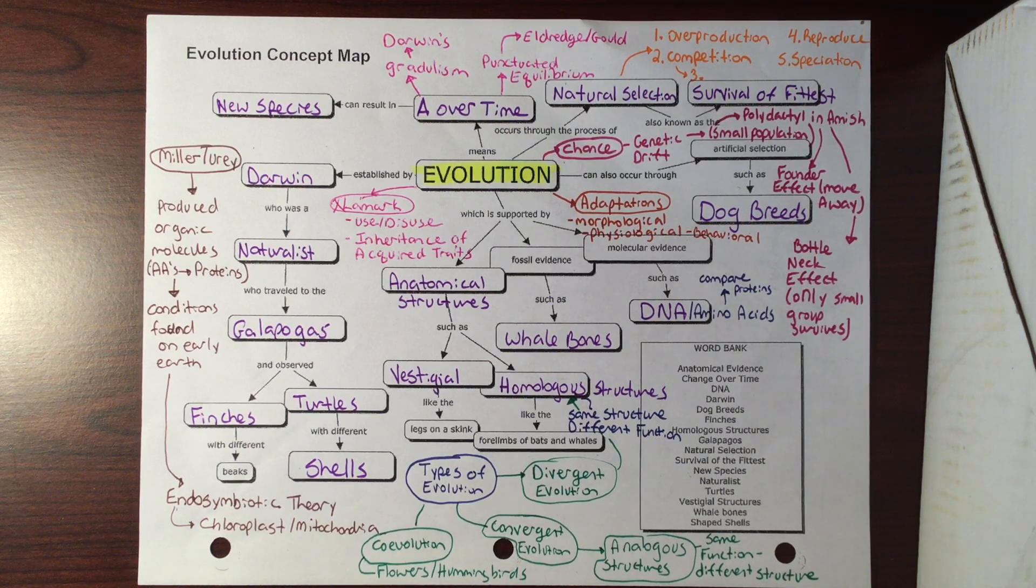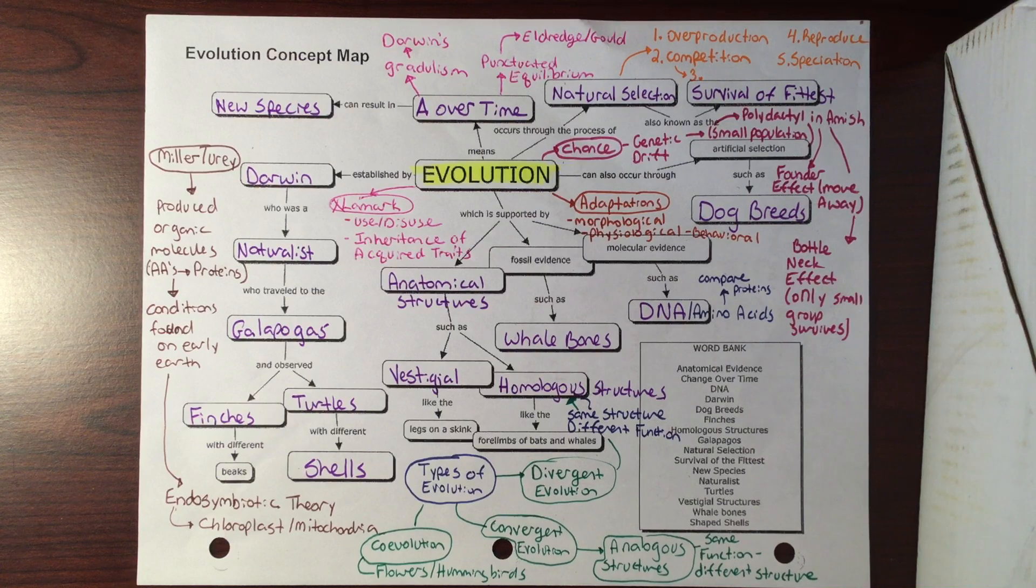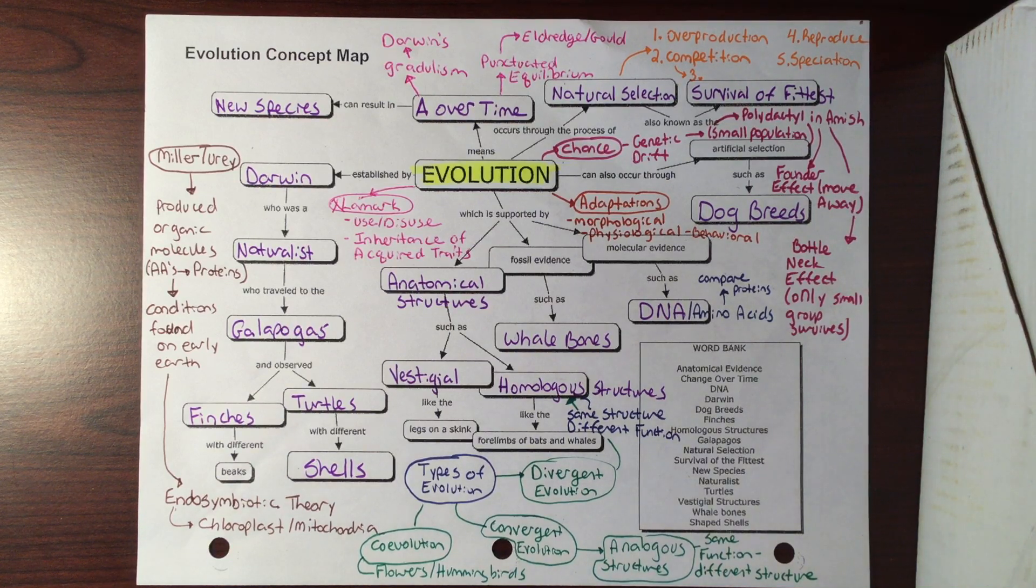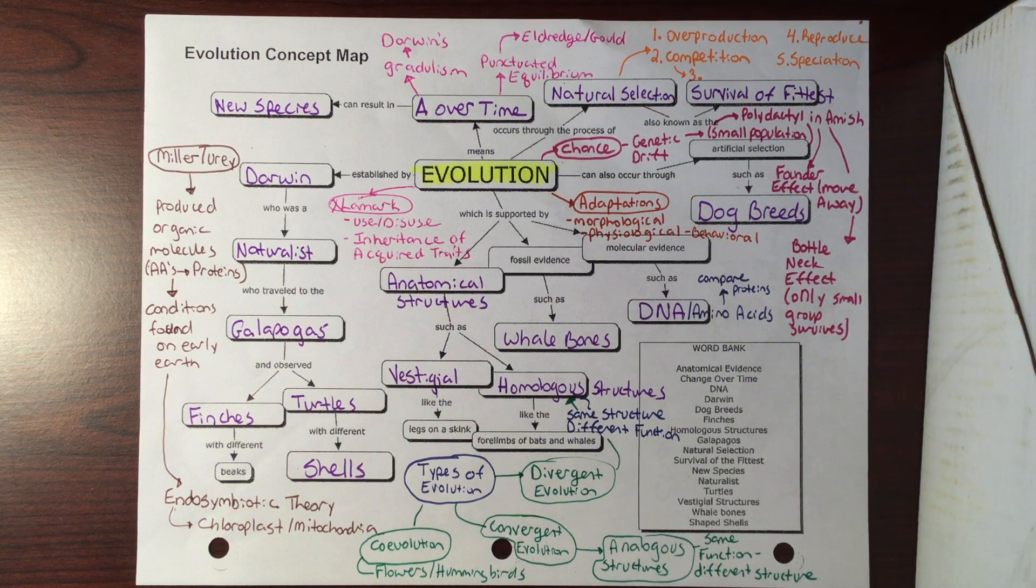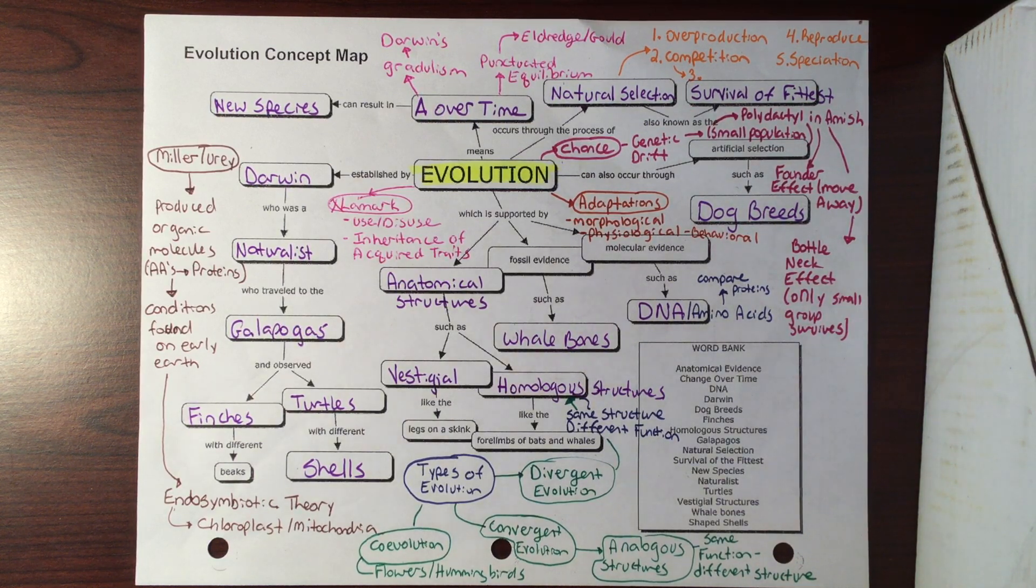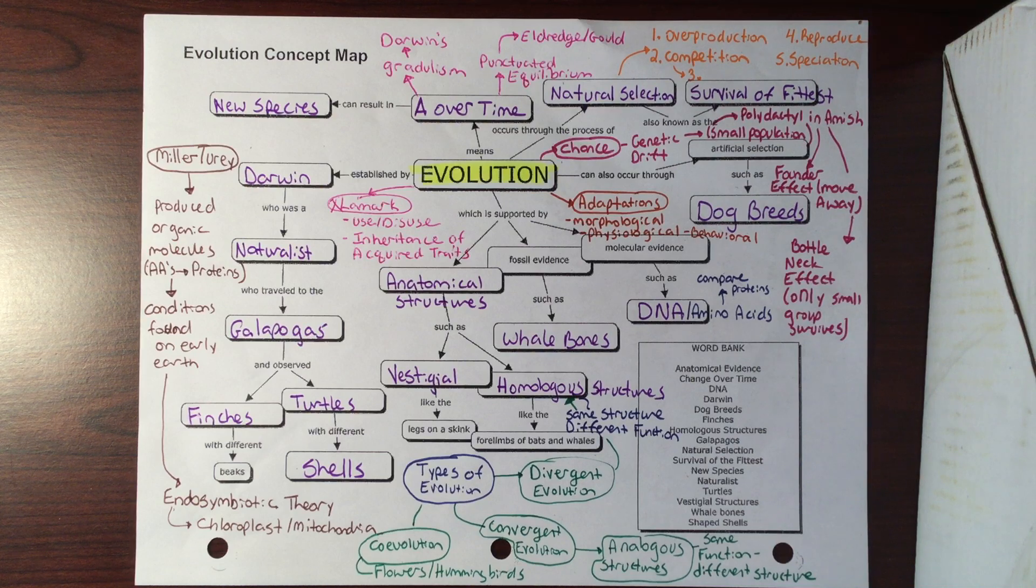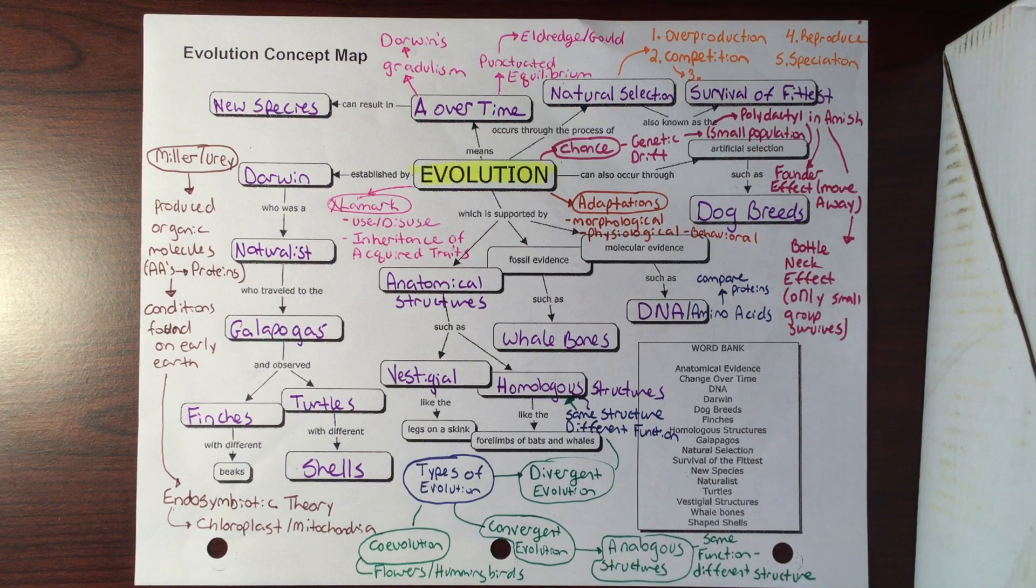Within that you also have domains. Domains is the largest grouping. It gives you the most organisms per grouping, so they're not specific at all - it's the most broad. Species is going to be your most specific, talking about one specific organism. Know your little saying: King Philip came over for grape soda.